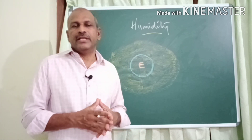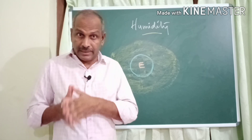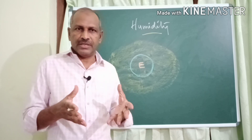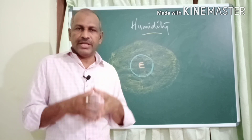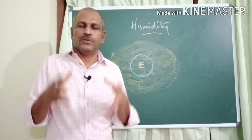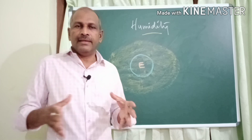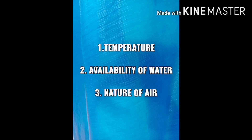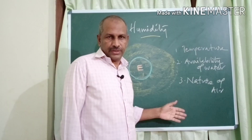Humidity varies time to time and place to place. What are the factors that influence variation in humidity — variation in the moisture content in the atmosphere? Mainly there are three factors: temperature, availability of water, and nature of air.